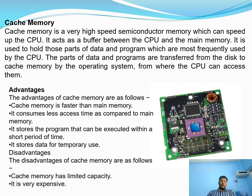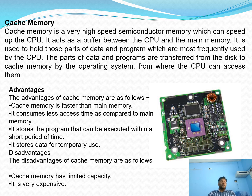The cache memory figure is shown in this slide, and there are some advantages of cache memory. The advantages are: it is faster than main memory (primary memory), it consumes less access time compared to main memory, it stores programs that can be executed within a short period of time, and it stores data for temporary use. There are also some disadvantages: cache memory has limited capacity and it is very expensive.